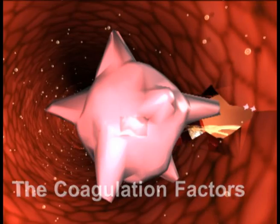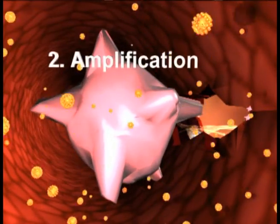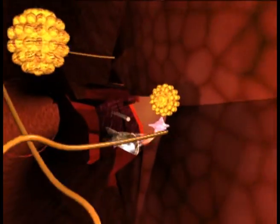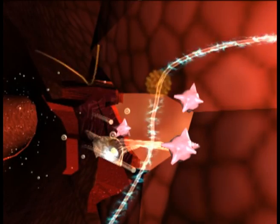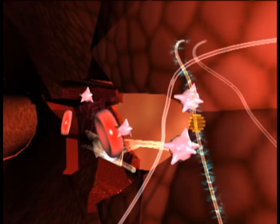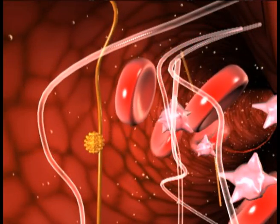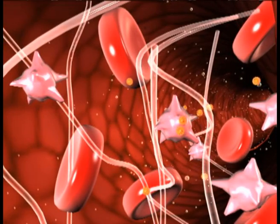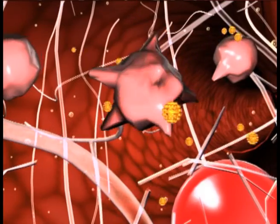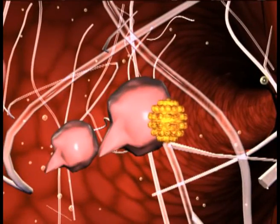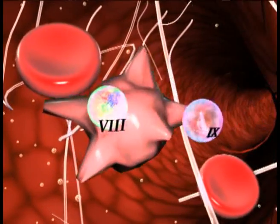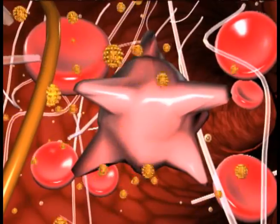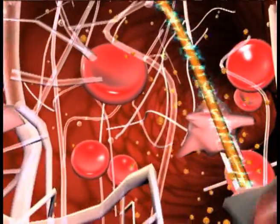By adhering to the surface of activated platelets, these factors induce an explosive production of thrombin. Now, thrombin possesses an essential property: it ensures conversion of fibrinogen into fibrin, so a stable and resistant clot is formed. In the middle of the clot, activated platelets produce even more thrombin, which in turn activates more platelets. Once more, due to the action of factors 8 and 9 adhering to these platelets, massive quantities of thrombin and fibrin are released, further stabilizing the clot formed this way.